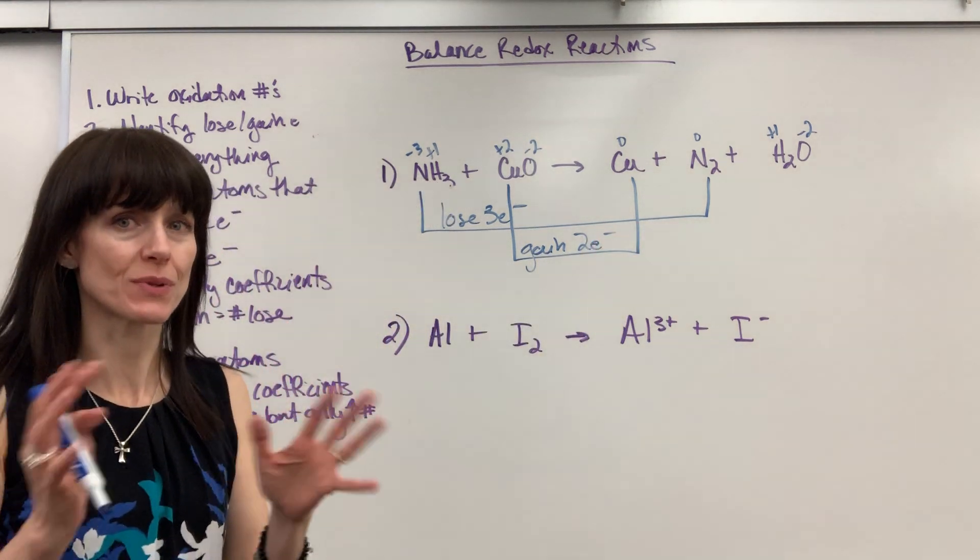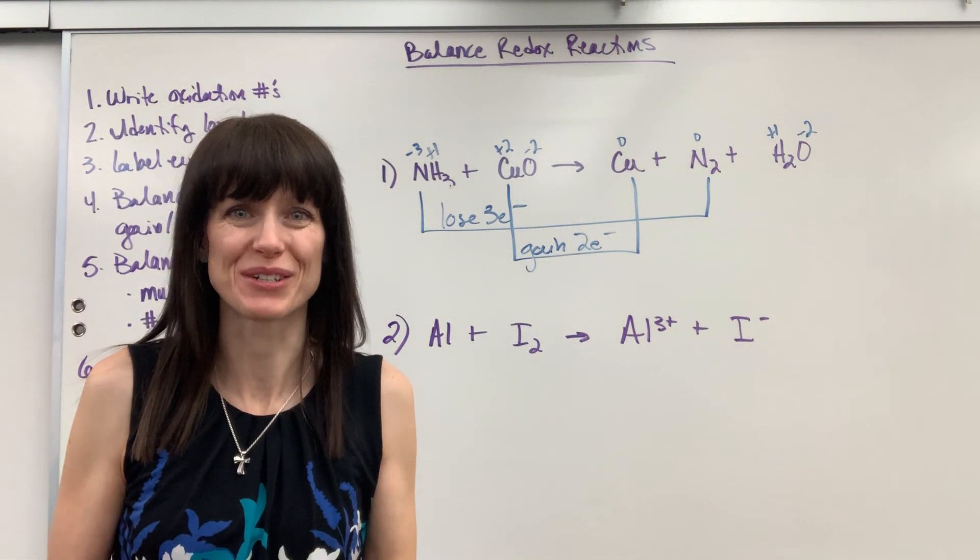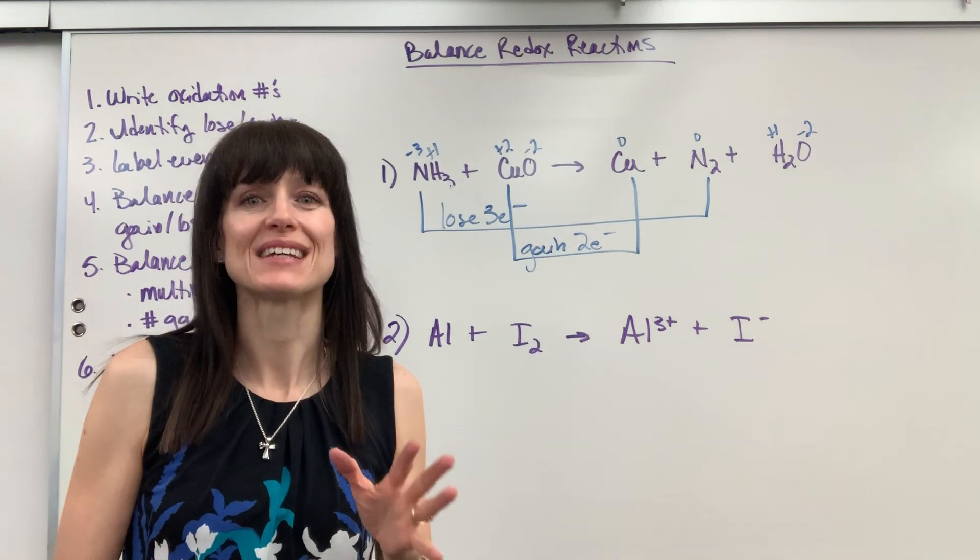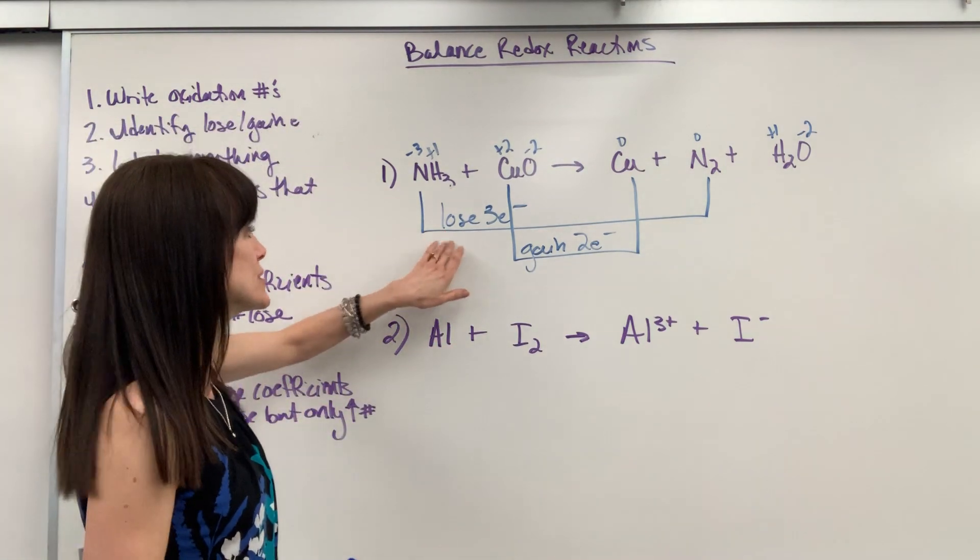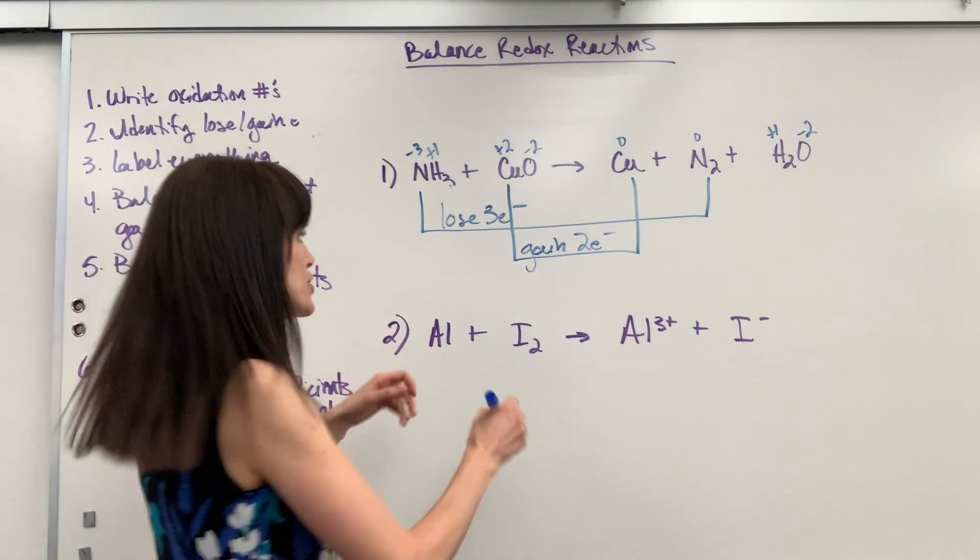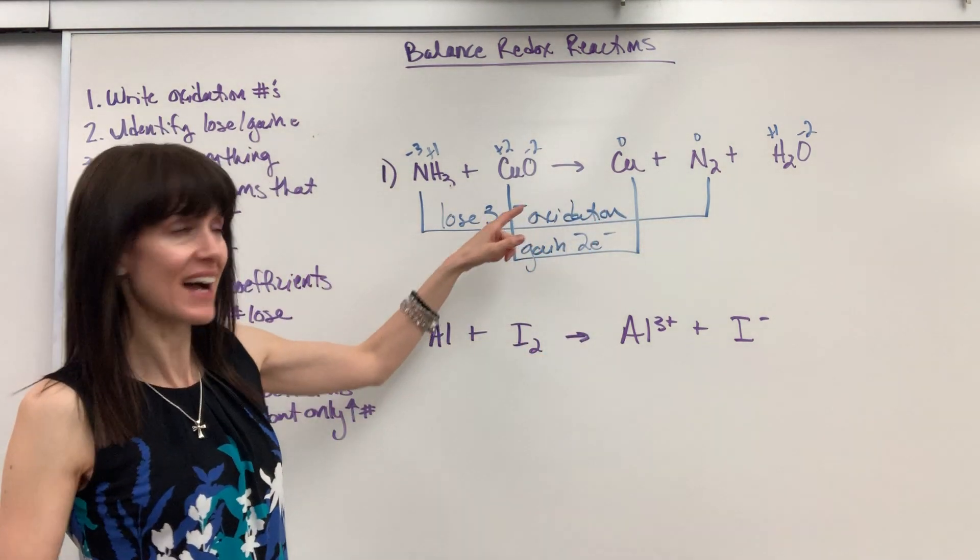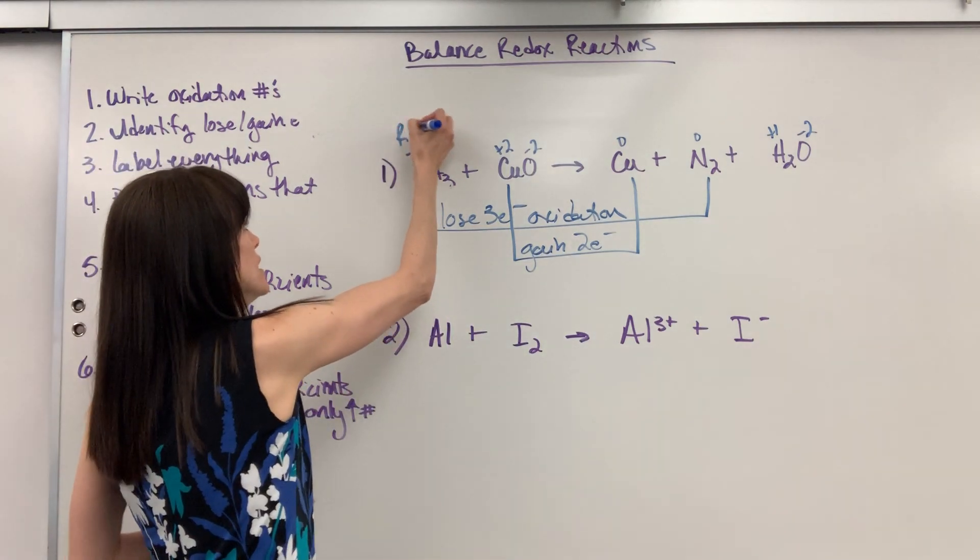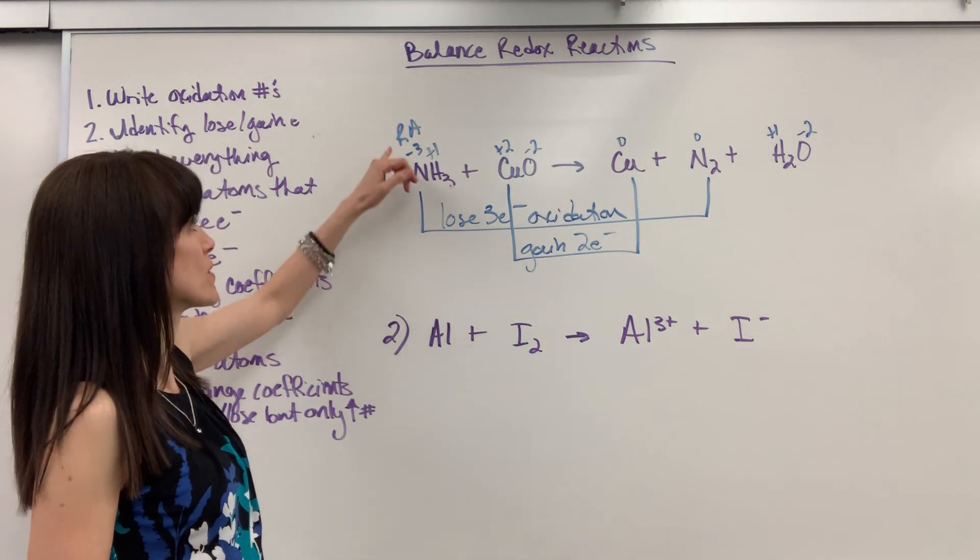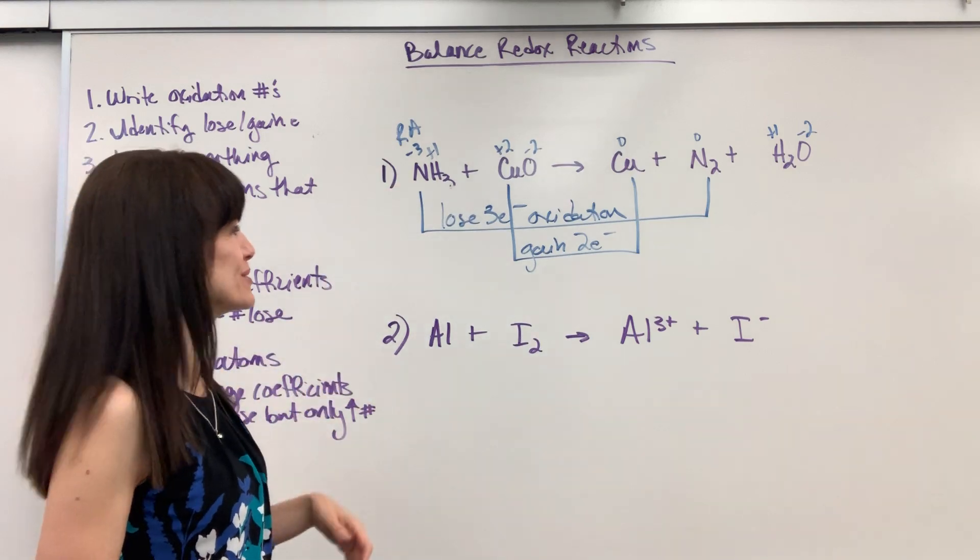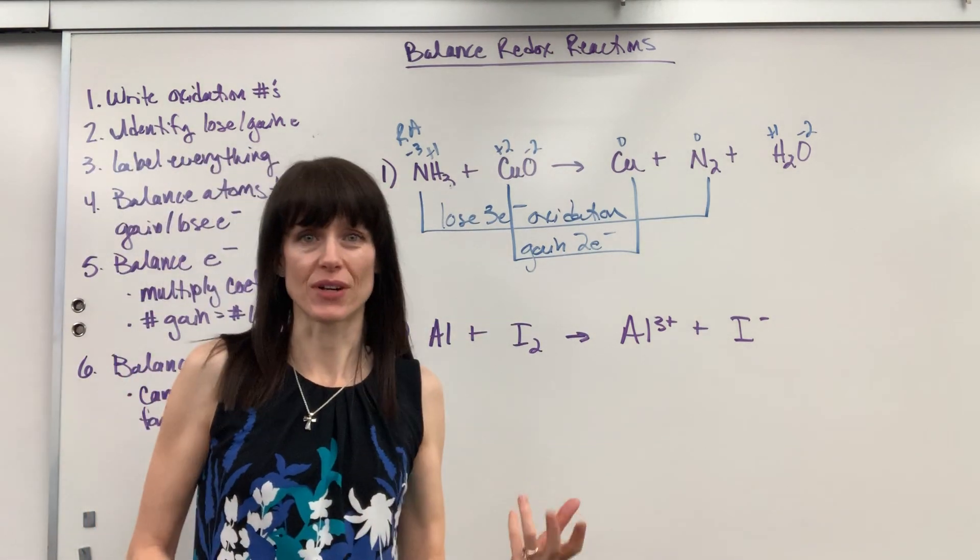Okay, so we know what lost, what's gained. Now let's use our terms. Leo the lion says ger. Leo: lose electrons oxidation. This loses electrons so it has to force something to gain. That's why it's called the reducing agent.